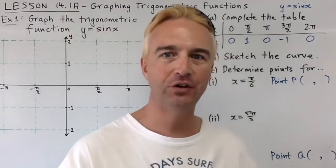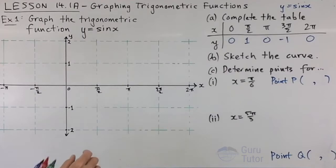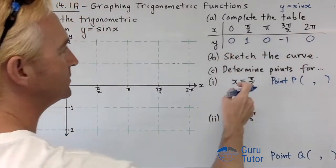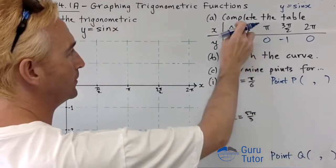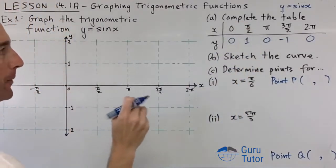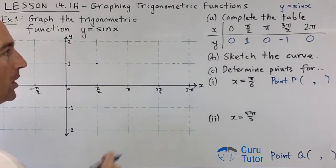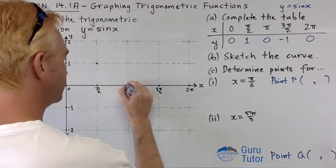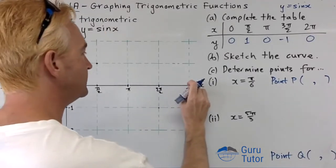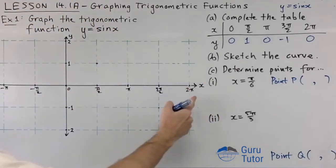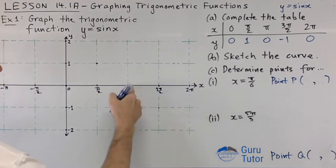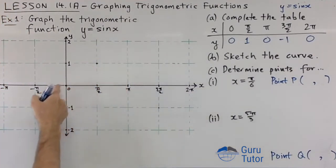Part B says sketch the curve. Let's actually put these points on our coordinate plane. Remember, these are coordinates of points. We've got point 0, 0. π/2, 1, which is up here. π, which is back down here, 0 again. 3π/2, which is minus 1. And 2π, which is here. Then if we just follow this pattern, we've got 0, minus 1, 0, 1, 0. If I kept going, the pattern continues: minus 1 and back to 0 again.